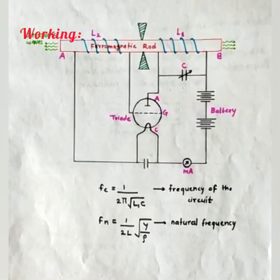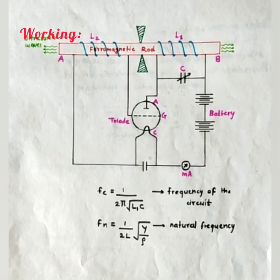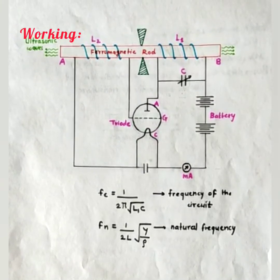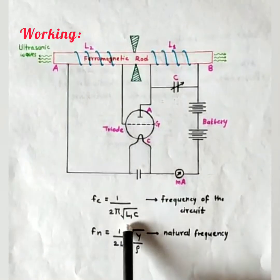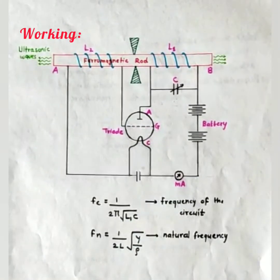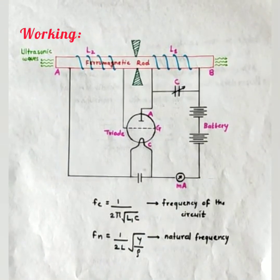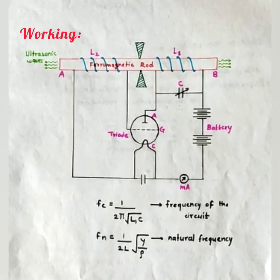Generally, these vibrations are very small as the frequency of the circuit which is given by Fc equals to 1 by 2π root L1C, which is not sufficient for production of ultrasonic waves as it requires very high frequency.